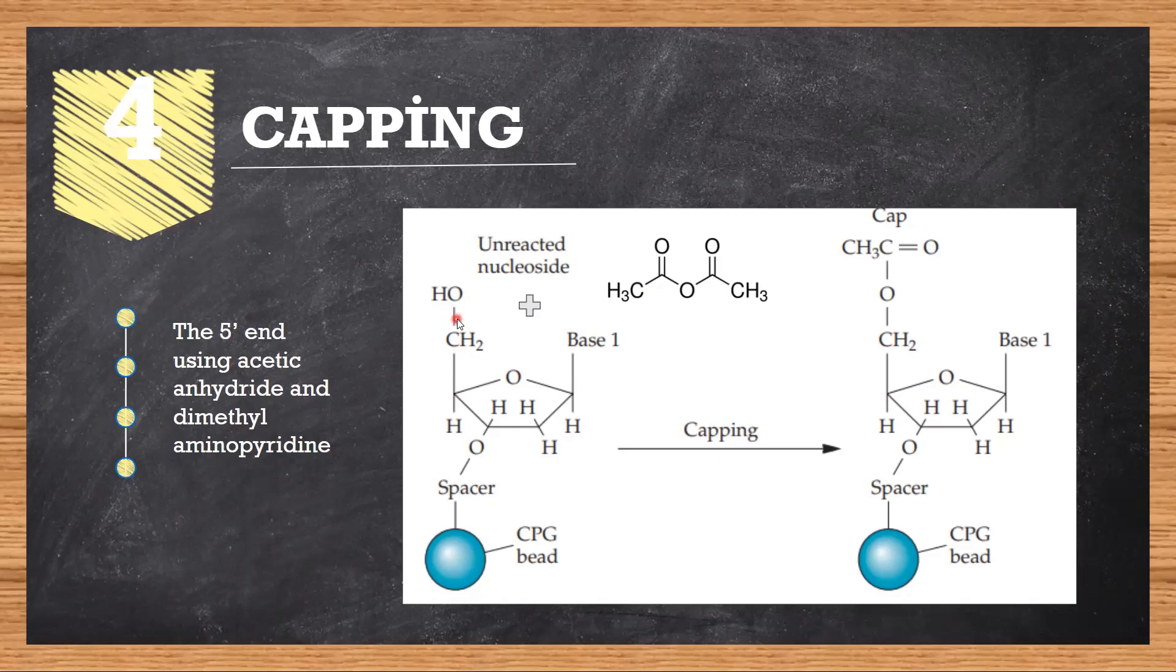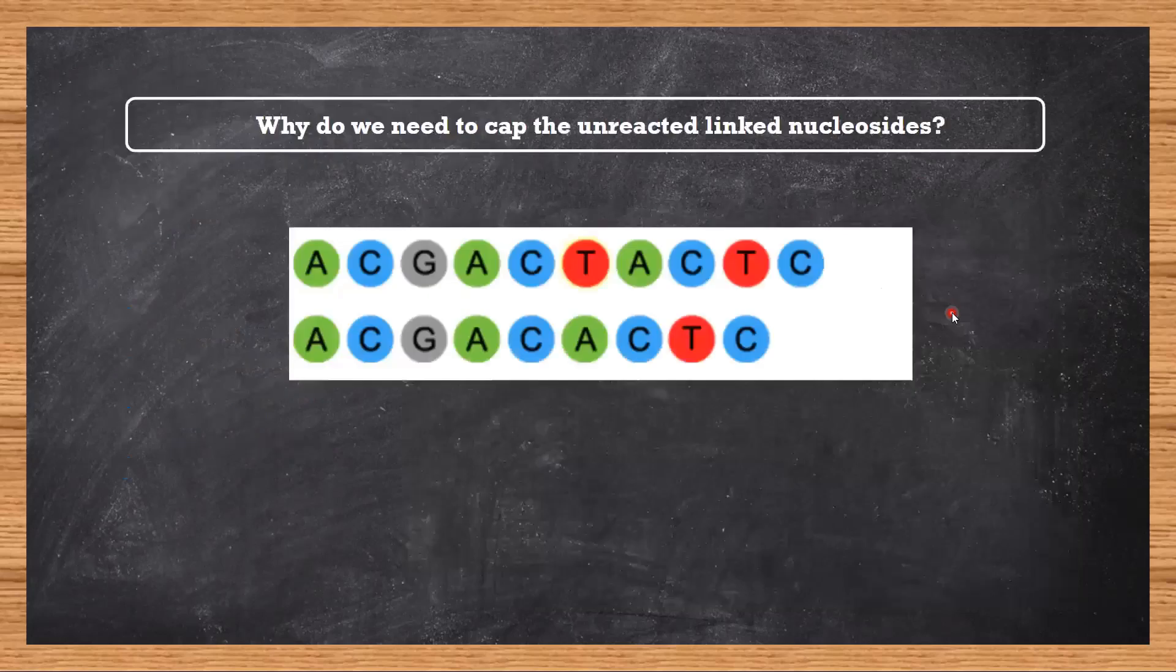What we need to do is the unreacted OH groups need to be capped or blocked, and that's done by treating it with acetic anhydride. The hydrogen over here goes with the CH3C double bond O OH and forms acetic acid, and what you get is this acetyl cap, CH3C double bond O. Now this nucleotide will no more react further.